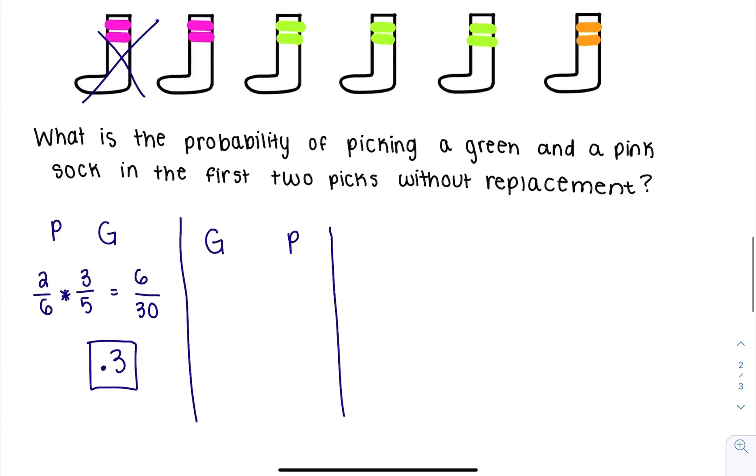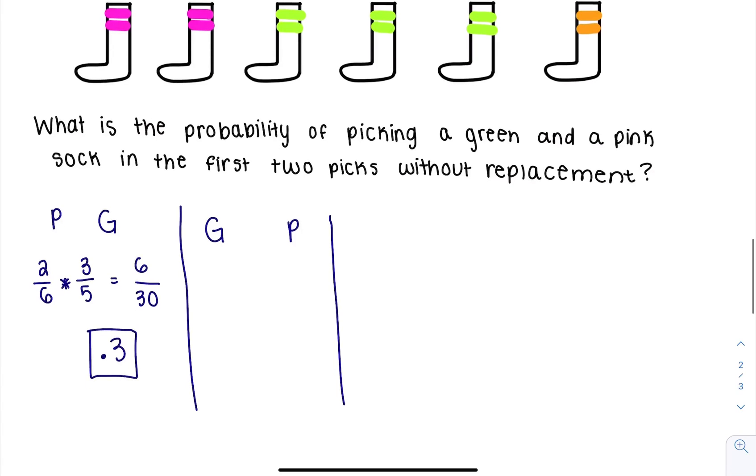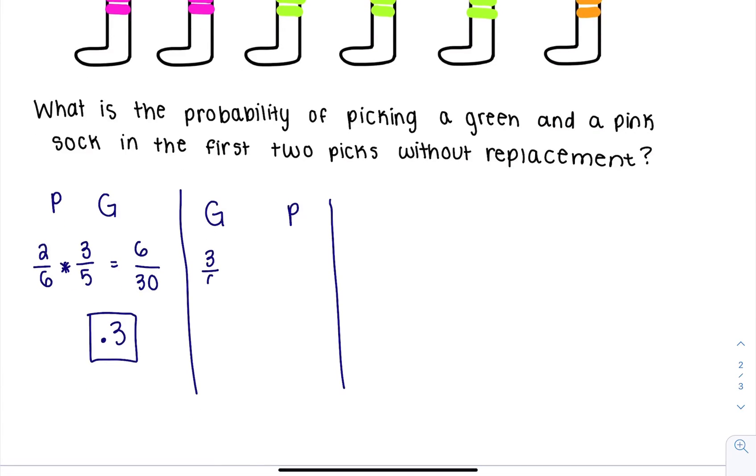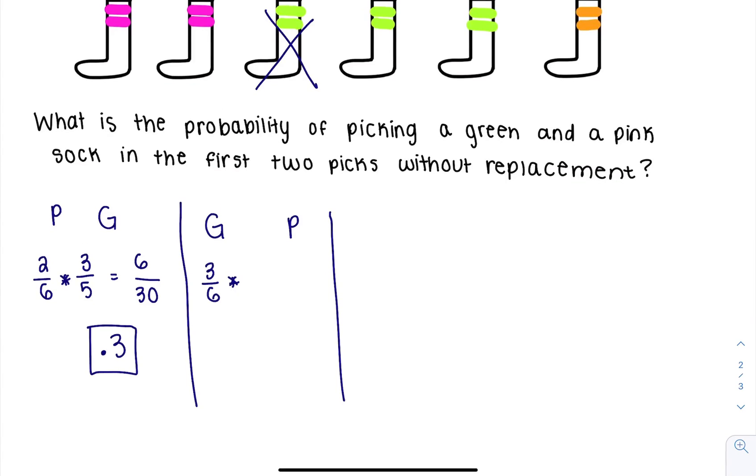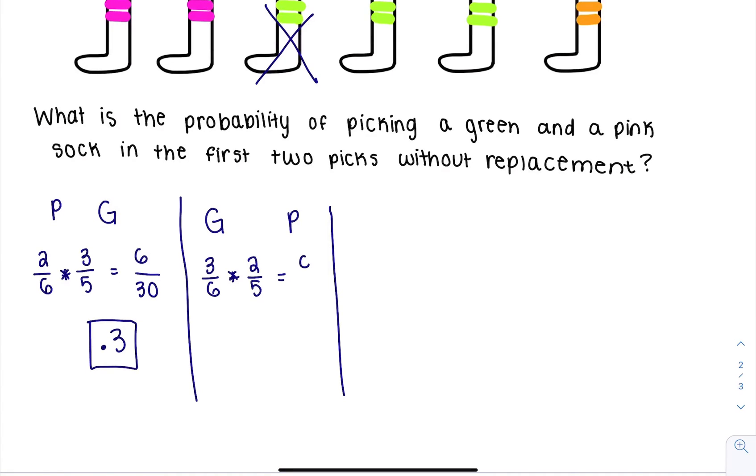On the other hand, I could draw a green sock first, in which case I have a 3 out of 6 chance of doing that. Once I've drawn a green sock, I have a 2 out of 5 chance of drawing a pink sock. And remember, I'm going to multiply. So I end up with 6 out of 30, which is again 0.3.